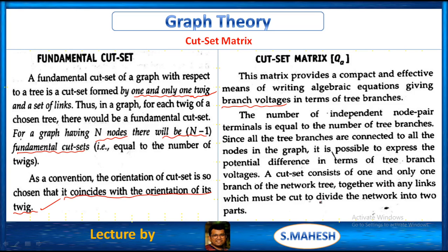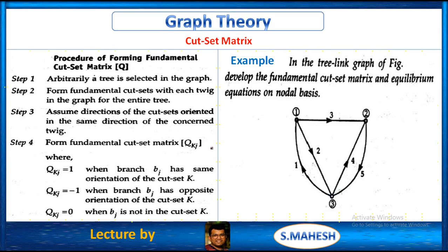So providing a cut set divides the network into two parts. With an example, you will have a better idea about the concept. The procedure to get the cut set matrix: first, we have to arbitrarily select a tree in the graph. Next, form the fundamental cut set with each twig in the graph for the entire tree.